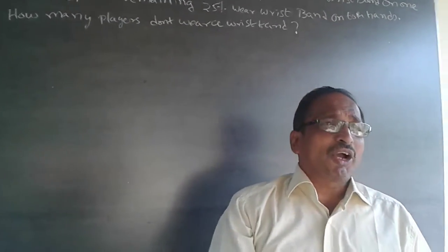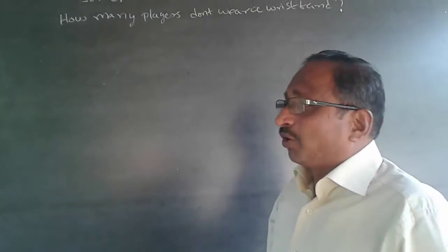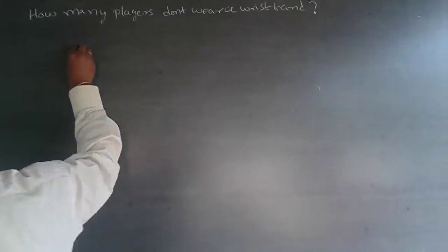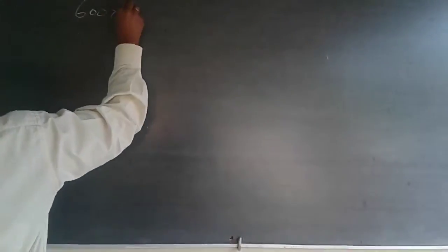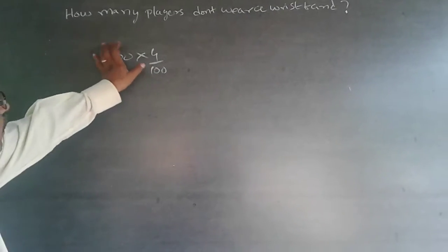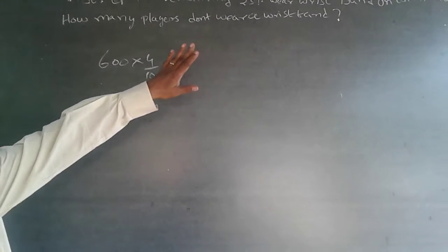He is talking about 600 people at 4%. So what we will do is 4% is 4 by 100 of 600 has to be done. So 600 into 4 by 100, this is 4%. When I talk about percentage, 600 into 4 by 100 are wearing this band on one wrist.